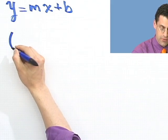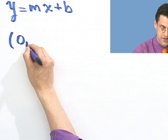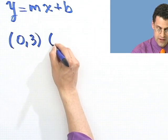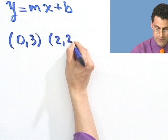But now suppose I asked you to find the equation of the line that passes through two points, and that's all you know. I don't tell you the slope, I just tell you the two points. So let's do a first example. Find the equation of the line that passes through (0,3) and (2,2).